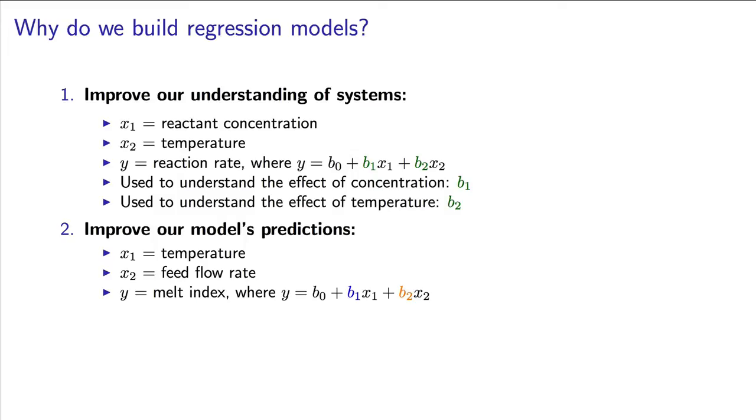We're also learning about our system in this case. We can interpret these coefficients, B1 and B2, and better understand how temperature and feed flow rate affect the melt index.